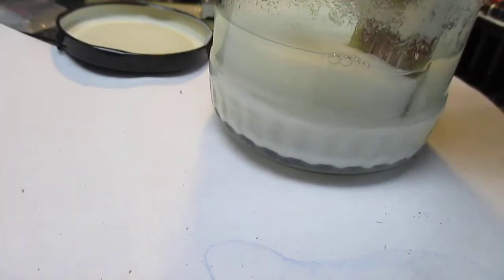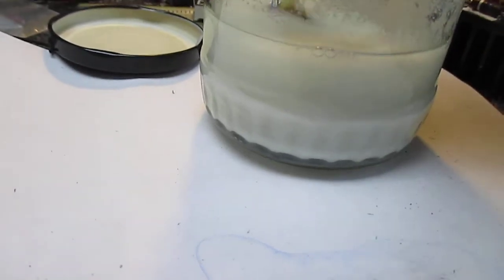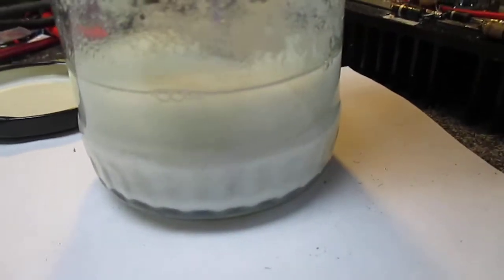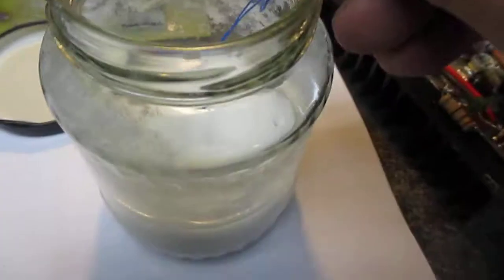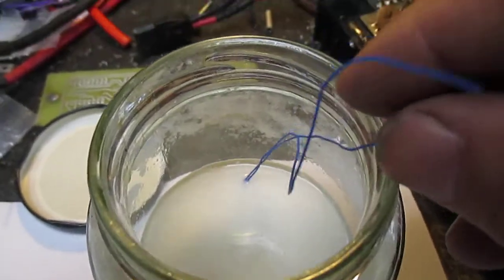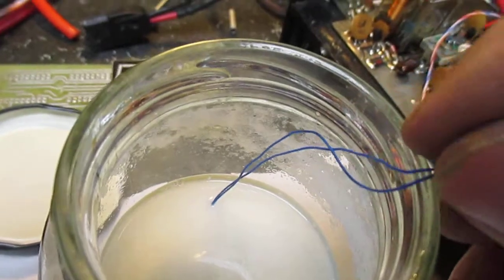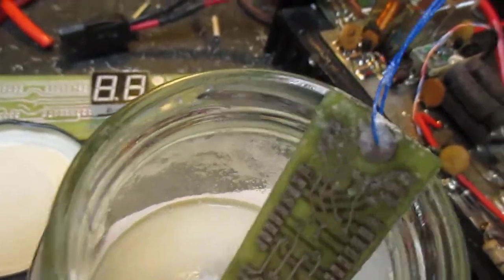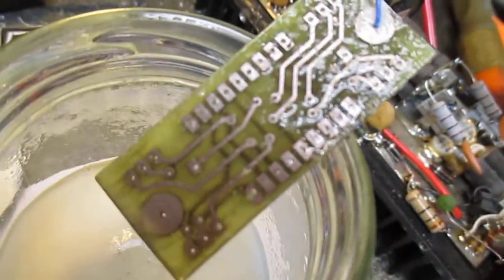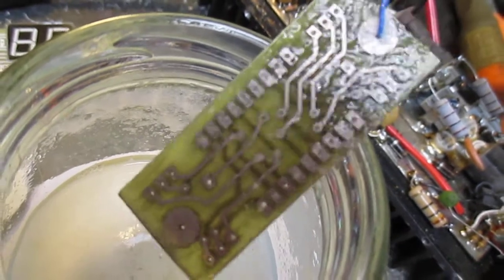We're going to drop it in this stuff that I made today. I'm going to leave it soak in there for a minute. It really doesn't take too long. But as you can see, it's no longer so shiny copper. It's now tin-plated.